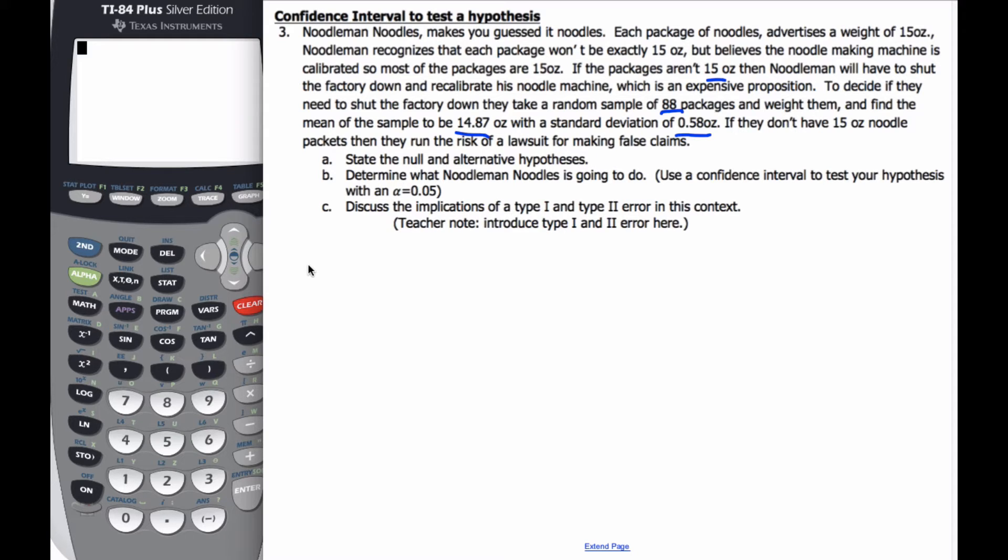We want to state the null and alternative hypothesis. The null hypothesis is simply that the mean is equal to 15, whereas the alternative hypothesis is that the mean is not 15.